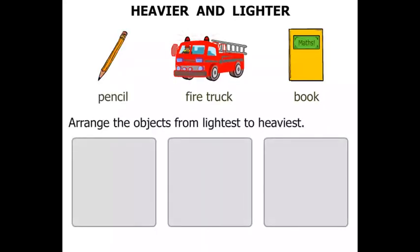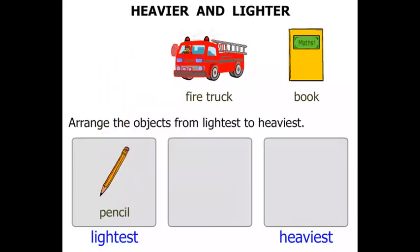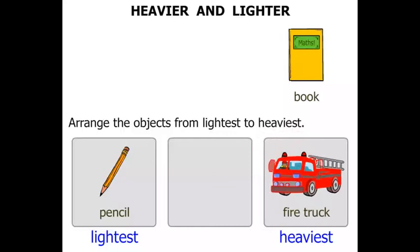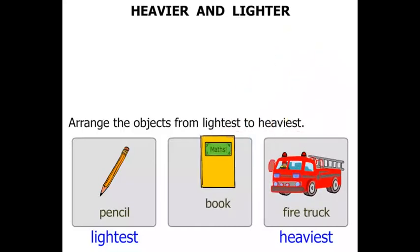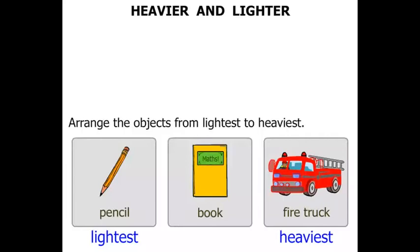Arrange the objects from lightest to heaviest. So we're going to put the lightest there, and the heaviest there. Well, the lightest is the pencil. The heaviest, the fire truck. So the one in the middle there would be the book. Okay, but the book, of course, would be much closer to the pencil than the fire truck.